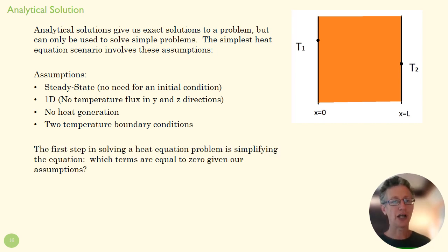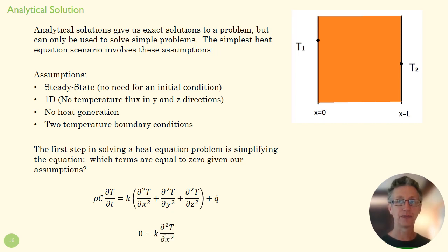So the first step in solving this is to simplify our equation. So let's take this guy and think about what these assumptions mean. What does steady state mean? Well, it means dT/dt is nothing, so this whole term disappears. No heat generation, so this term disappears. Nothing in the Y or Z direction, so these two terms disappear. And the only thing we have left is our diffusion term in the X direction. And so that's what our simplified heat equation looks for this particular problem.